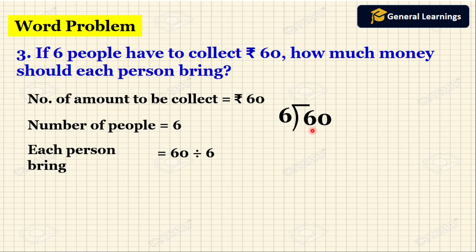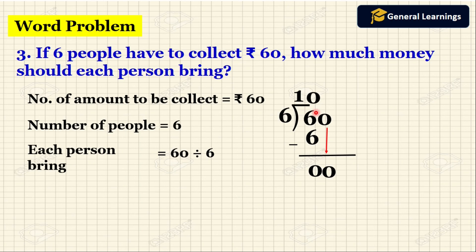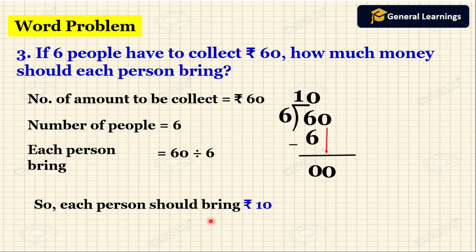Now we need to divide 6 by 6. Checking the multiplication table of 6: 6 once is 6. Write 1 in the quotient, write 6 below 6, draw a line, and subtract. We get 0. Bring down the next number which is 0. Since 0 is not divisible by 6, we write 0 in the quotient. So the answer is 10. When we divide 60 by 6 we get 10. So each person should bring rupees 10.